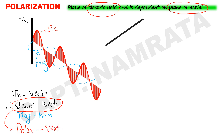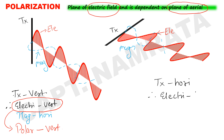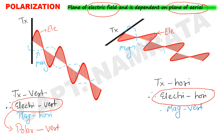On the other hand, if we have a horizontal transmitter, the electric component will travel in the horizontal plane. Magnetic is still present and in this case it will go in a vertical direction. To define polarization, since the transmitter is horizontal, the electric component will travel in a horizontal plane. We still have the magnetic component present, which will be vertical. But to define polarization, we look at the electric part, which is horizontal — hence polarization will be horizontal.